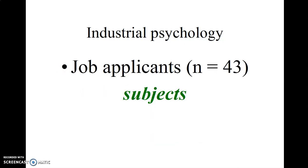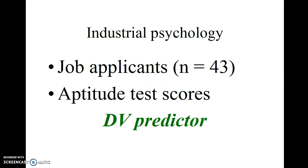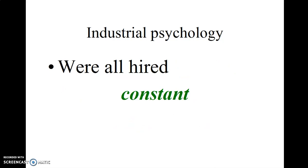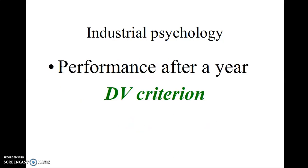The job applicants would be the subjects of this research. The aptitude test scores that they got before they were hired, that particular dependent variable, that measure of performance, is being used as a predictor of future outcomes. The fact that they were all hired means that it was a constant. The performance on the job after a year or so would be an outcome measure, a dependent variable measuring their performance, the criterion variable in this particular study.